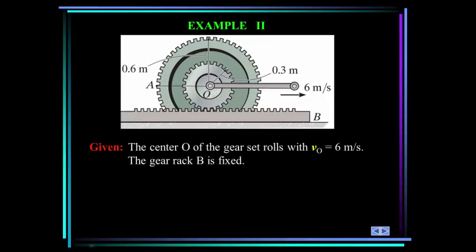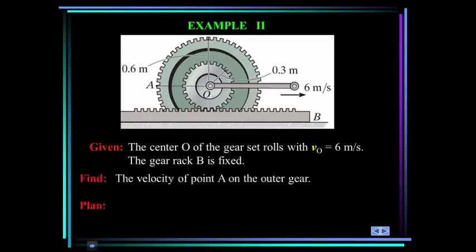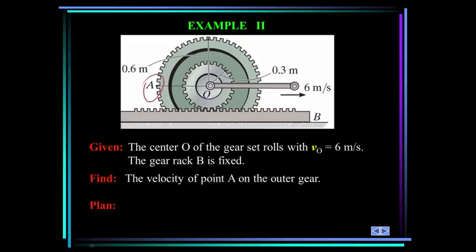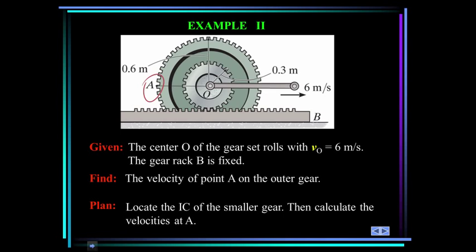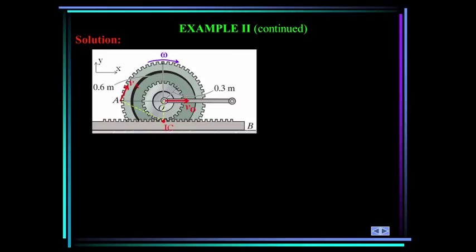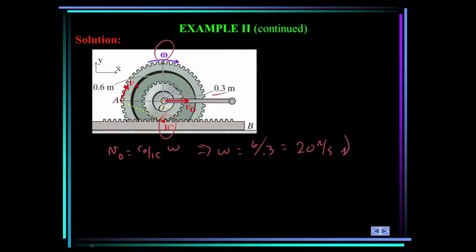Here's another example. The center O of this gear set rolls with velocity 6 meters per second. The gear rack at B is fixed. Find the velocity of point A on the outer gear. Our plan is to locate the instantaneous center of the smaller gear and then calculate the velocity of A. Since the gear rolls without slipping, the instantaneous center is located at the contact point. The angular velocity omega is determined by: v_O = r_{O/IC} × omega, so omega equals 6 divided by 0.3 meters, giving omega equal to 20 radians per second, clockwise.